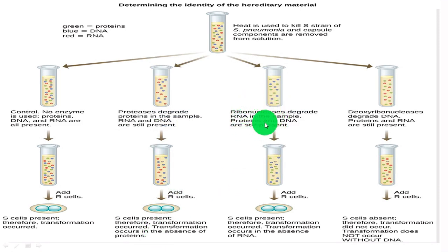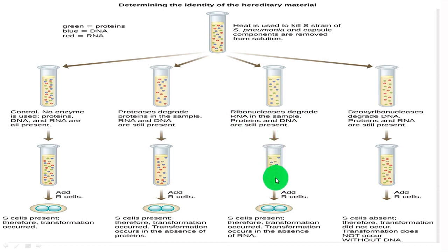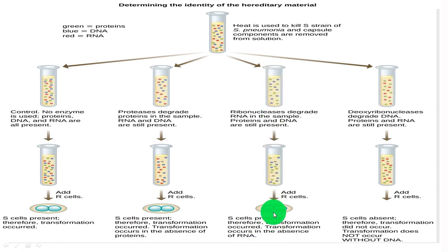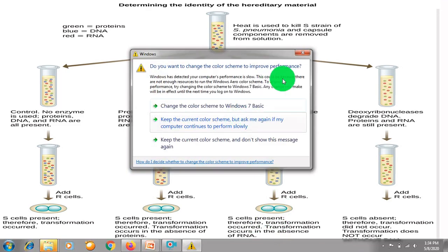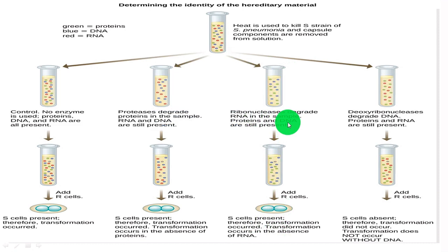In the next step, they added ribonuclease enzyme, which breaks down RNA. Now only DNA and protein remained — the green-colored proteins and the blue-colored DNA. When R-type cells were added to this test tube, they again observed S cells, meaning transformation still took place. In this case, transformation occurred in the absence of RNA. So they concluded that proteins are not responsible for transformation (degraded by protease), and RNA is not responsible either (degraded by ribonuclease). Only DNA remained.